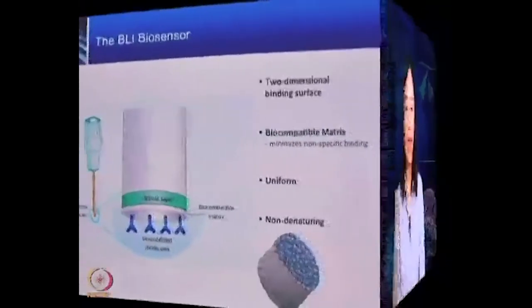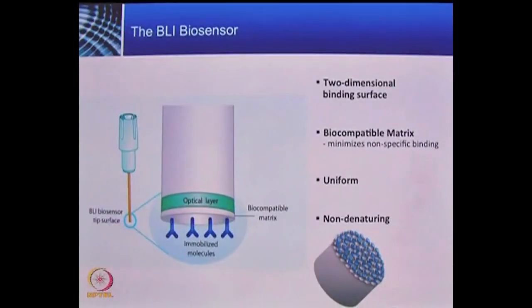The core part of the BLI technology lies with the biosensor. If we take a close look at the biosensor, it is actually made of optical fiber at the end. At the very end of the biosensor is a two-dimensional biocompatible matrix. This matrix allows you to immobilize molecules on the surface to allow further analysis of biomolecule interactions. The benefit of using this patented biocompatible matrix is that it is very uniform, it minimizes non-specific molecule binding to the membrane, and it is also non-denaturing.